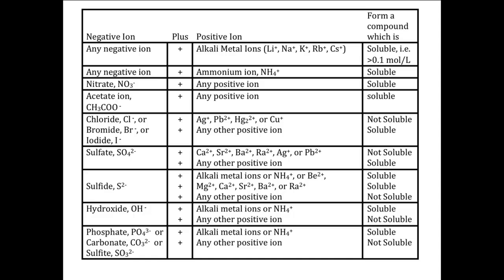So, how do we use the table? Suppose we wanted to determine whether the compound calcium carbonate is soluble. The first thing we need to do is find out what the ions are in the compound. We go to the table of ions and find that calcium ion is Ca2+, and carbonate ion is CO3-. Now we need to find those two ions in one of the rows in the table. It is easier to start by finding the negative ion, because the positive ions appear many times in that column. We find carbonate in row nine.